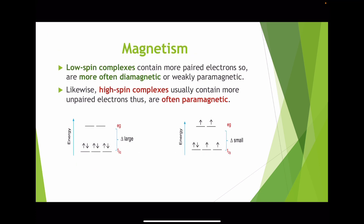Magnetism, as described by valence bond theory and crystal field theory: low spin complexes contain more paired electrons and are more often diamagnetic or weakly paramagnetic — this refers to strong field ligands. High spin complexes usually contain more unpaired electrons and are thus often paramagnetic — this refers to weak field ligands. Low spin complexes have low spin and high spin complexes have high spin.